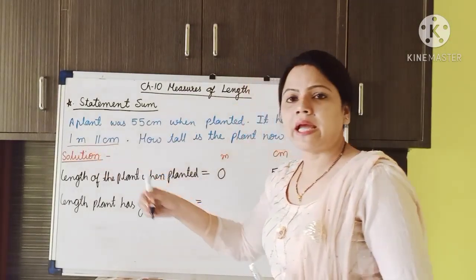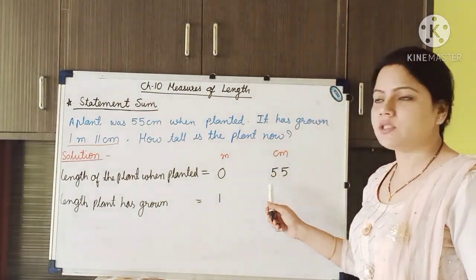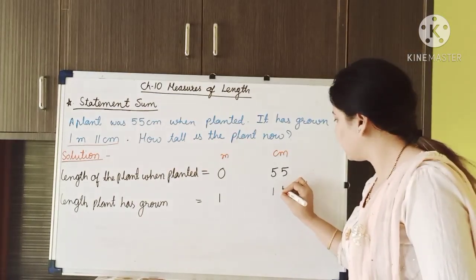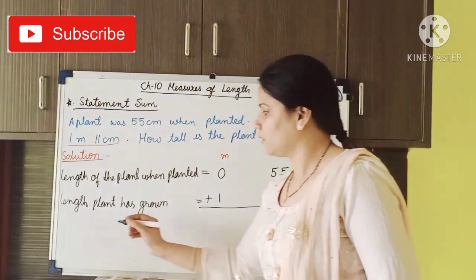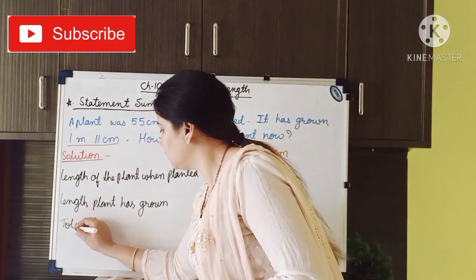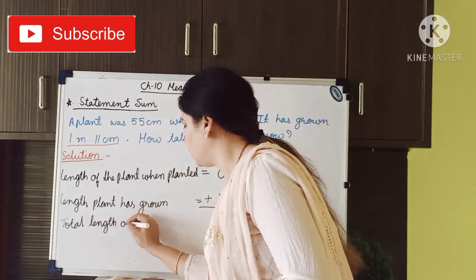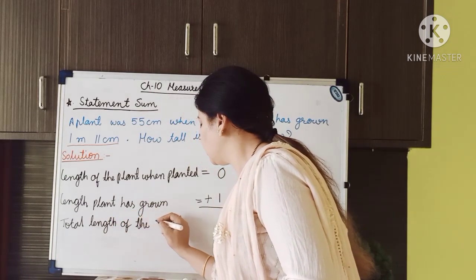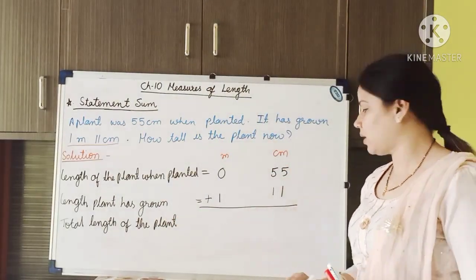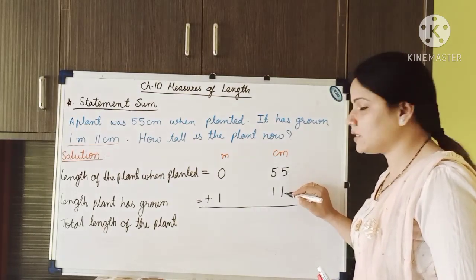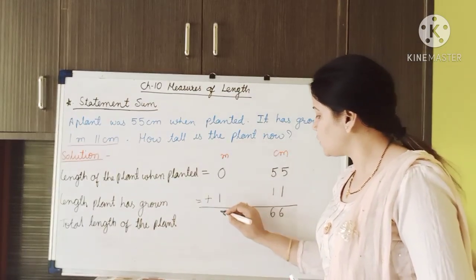The second statement: length the plant has grown is equal to 1 meter and 11 centimeter. Under the column of meter we will write 1, and under the column of centimeter we will write 11. Now we have to give the addition sign. Now the third statement: total length of the plant. We have to add these two numbers — 5 plus 1 is equal to 6, 5 plus 1 is equal to 6, and 1 plus 0 is equal to 1.